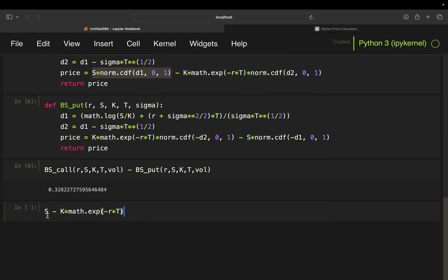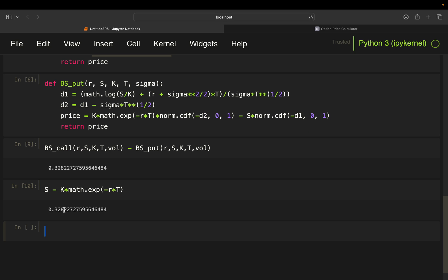So, current price minus the present value of the strike price. So, that is exactly what this is, is exactly the same as this. So, the put call parity would hold here.